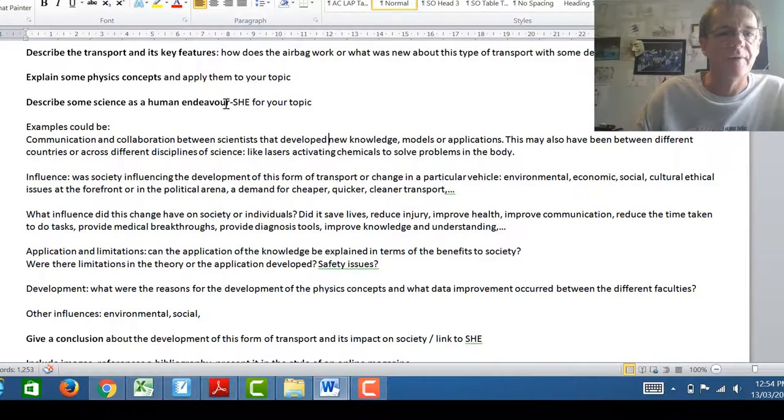And you could look at communication and collaboration between scientists, for example, that develop new models. You could look at that across countries or across different disciplines of science. You look at the influence that society had on the development here or that that development had on society. Okay. Both ways there. And they can be environmental reasons, economic, social, cultural, ethical and so on. Okay. It could be in the political arena as well.